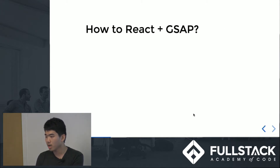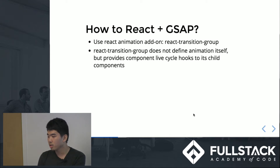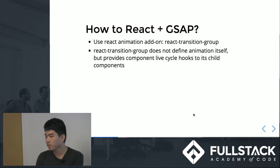Now, how to use React with GSAP. We're going to use a React animation library called React Transition Group. React Transition Group is an API made by React. It does not define animation itself, but it provides component lifecycle hooks to its child components. When building a React app, we use lifecycle methods like componentDidMount, and React Transition Group provides similar lifecycle hooks for its child components.